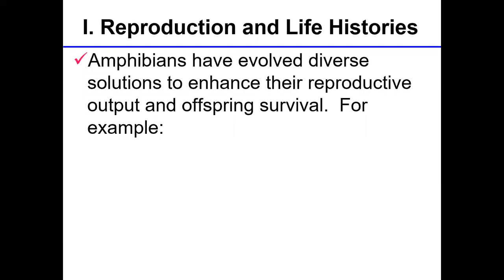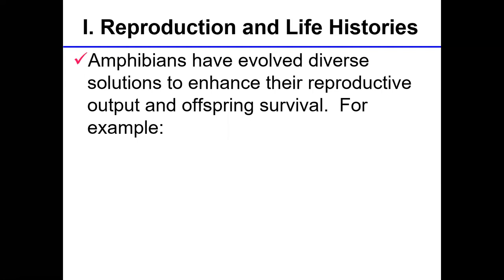The ability of organisms to reproduce and maintain their genes in future generations is a key feature that separates living from non-living things. Sexual reproduction provides the opportunity of genetic variation, and this allows natural selection to operate. Organisms cannot predict the environment in which their offspring will survive or develop. Therefore, they compensate by producing lots and lots of offspring, all slightly different from each other because of the way genes are reshuffled during reproduction, providing the opportunity for adaptation in changing environments.